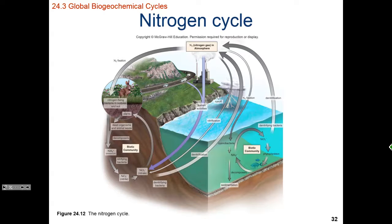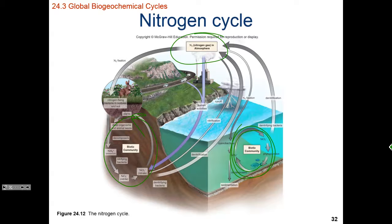Our nitrogen cycle becomes rather complex with lots of extra cycling involved. We have the N2 gas in the atmosphere, and there can be a separate community or cycle of nitrogen cycling in the ocean and also a separate cycle in the soil, alternating between ammonia, nitrite, and nitrate forms of nitrogen. We can add nitrogen from the atmosphere through lightning fixation or through nitrifying bacteria to make it biologically available.